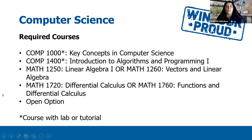So as a recap, if you are enrolled in any of our computer science major programs, you will need to register in Key Concepts in Computer Science, Introduction to Algorithms and Programming 1, one linear algebra math, and one calculus course depending on your math background from grade 12. For your fifth and final course, you have an open option, so you can take any course across the university that fits in your schedule and you're interested in. I encourage you to spend some time going through our Fall 2021 course offerings to see which courses jump out at you to fill that last spot.